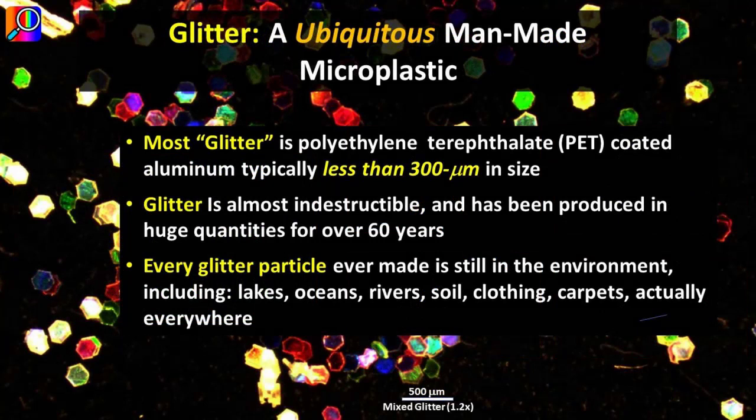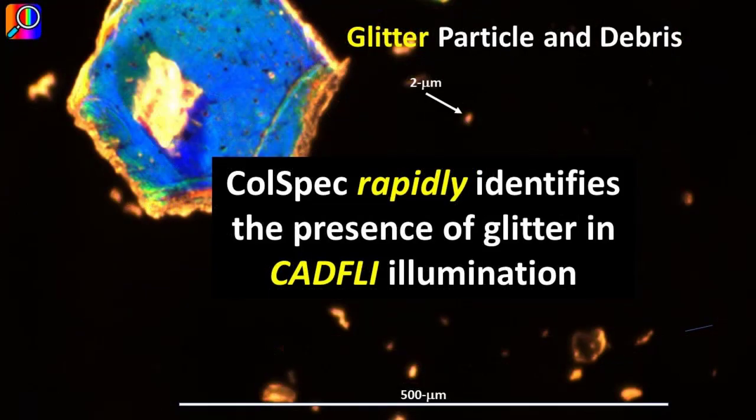Glitter is ubiquitous. It is an almost indestructible PET microplastic. Every glitter particle ever made is still in the environment, including lakes, oceans, rivers, soil, clothing, carpets — actually everywhere. A glitter particle and debris shown in cadfly illumination. Kohlspec rapidly identifies the presence of glitter, even 2 micron particles.